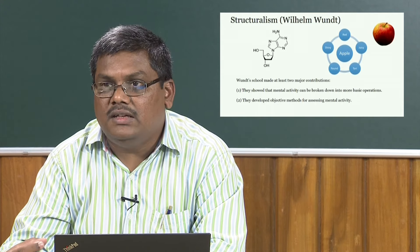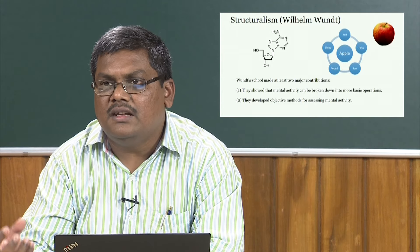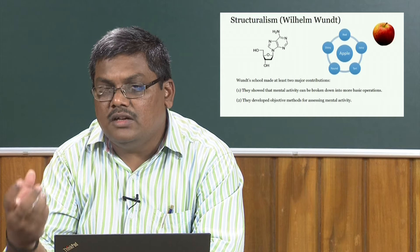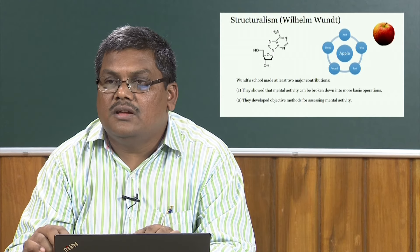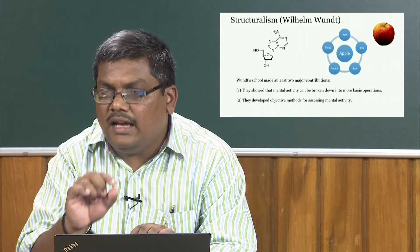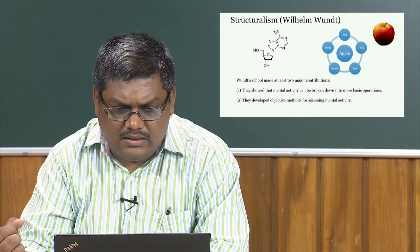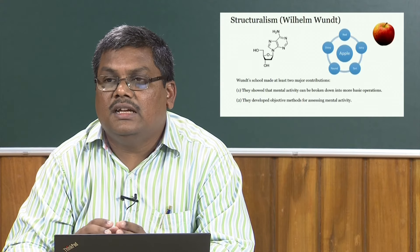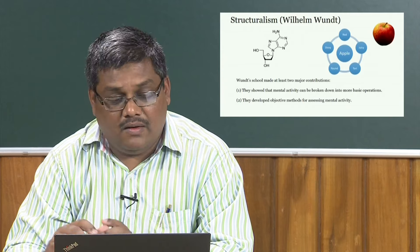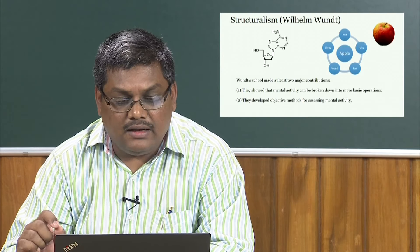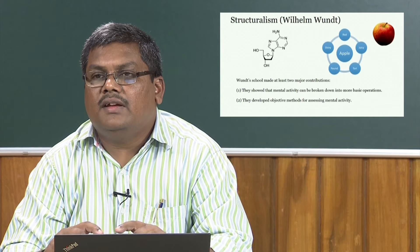In sum, Wundt was trying to explain mental processes in terms of sensations, feelings, and how these combine to give the actual image of an apple. This notion of taking a mental image and breaking it into its parts led to two major contributions: first, he showed that mental activity can be broken down into basic operations — the feeling of a sunrise can be broken into heat, cold, and basic light intensity — and second, he developed an objective method of studying mental activity.